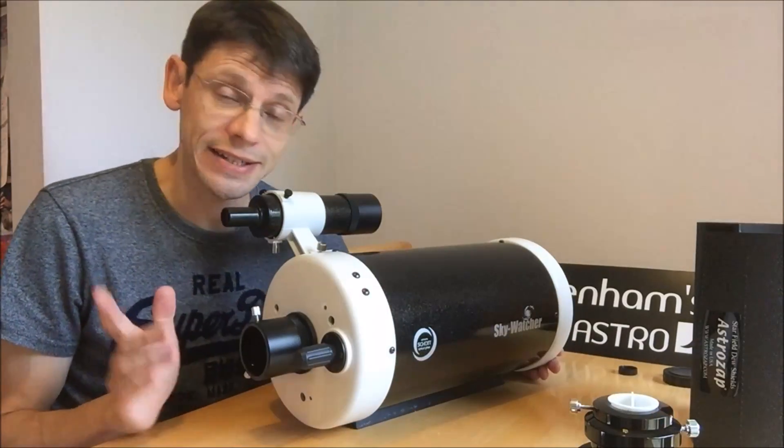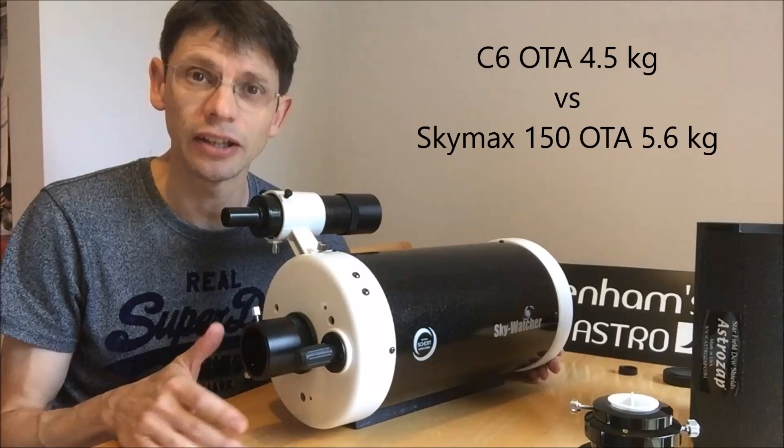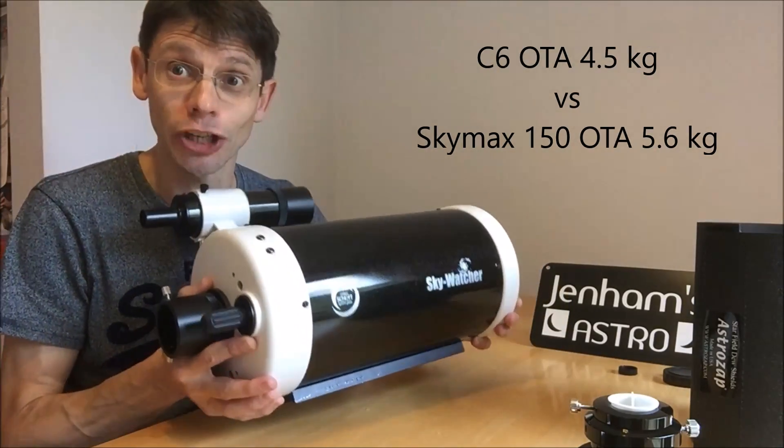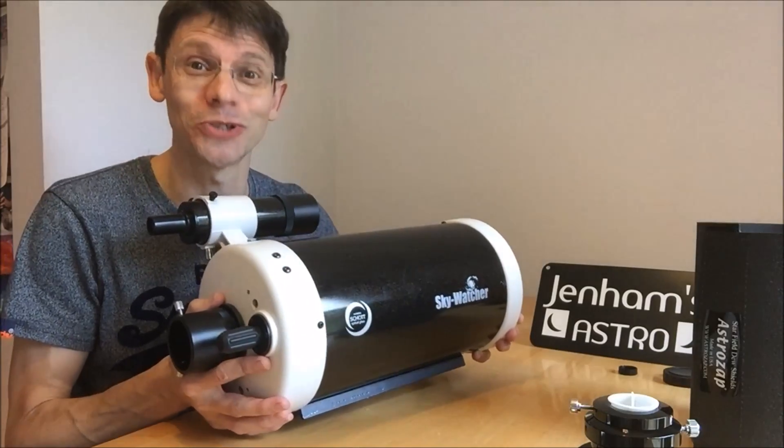You remember that a Celestron C6 telescope Schmidt-Cassegrain, by comparison, would weigh four and a half kilo. So this is a chunky bit of kit, albeit one that's well screwed together.